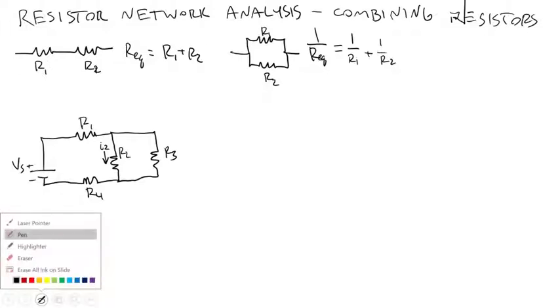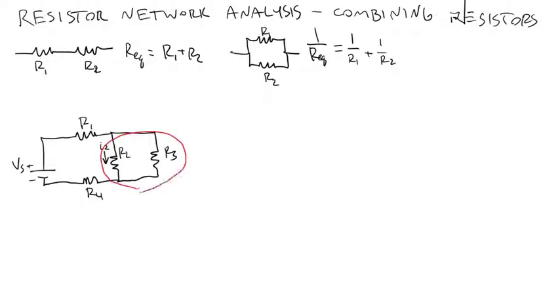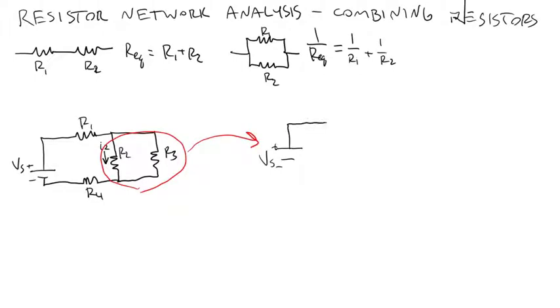So the first thing you can do here is say I'm going to combine these two resistors and draw the equivalent circuit. I'll be very explicit here and kind of redraw it each time. Vs, here's R1, here's my new equivalent resistor. I'm going to call that R2,3. And I know that since I combine those resistors in parallel, that 1 over R2,3 is equal to 1 over R2 plus 1 over R3. And then I still have R4.